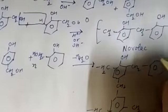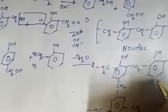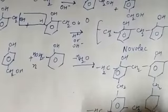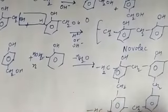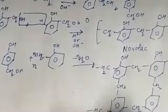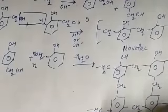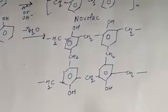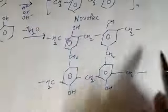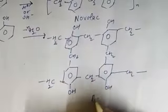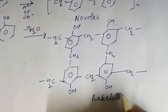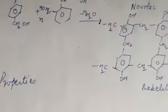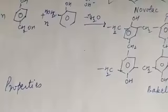The structure of Bakelite shows –OH and –CH₂– crosslinkages connecting phenolic units on all sides. These –CH₂– groups act as cross-linkages between the phenolic rings, and the molecule extends in multiple directions, which is why it is a crosslinked polymer called Bakelite.